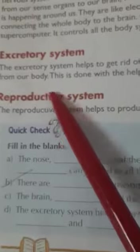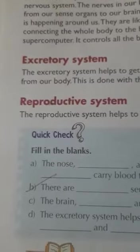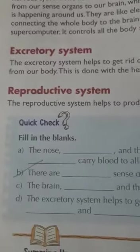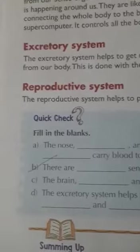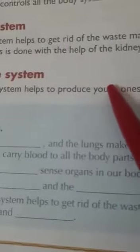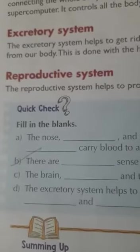Next is the excretory system. The excretory system helps to get rid of waste materials such as sweat and urine from our body. This is done with the help of our kidneys. Waste material is expelled from our body through sweat and urine, through a process of filtration of blood and excretion performed by the kidneys. The process of sweating is done by our skin and sweat glands.